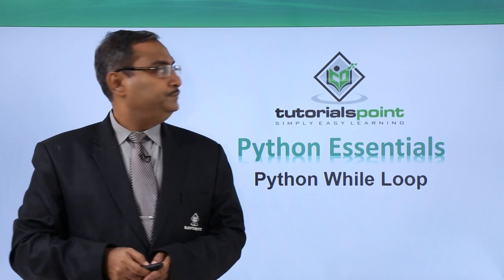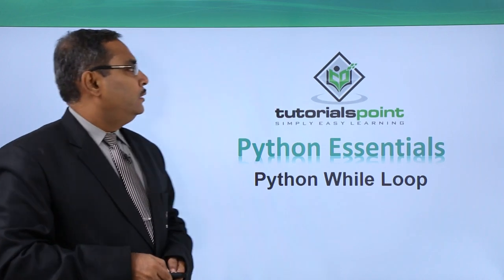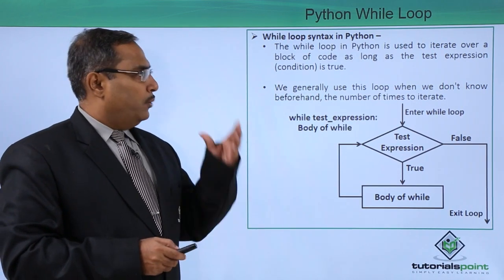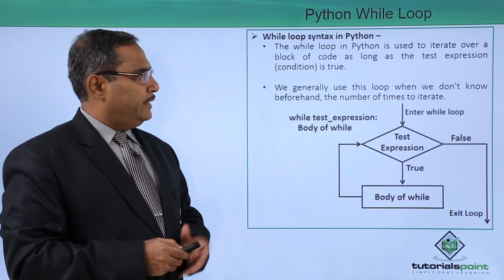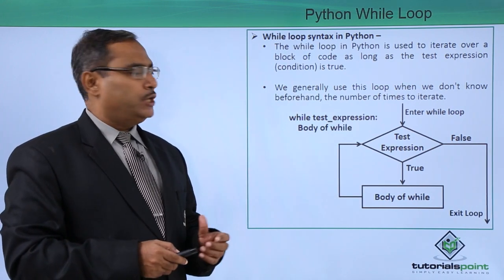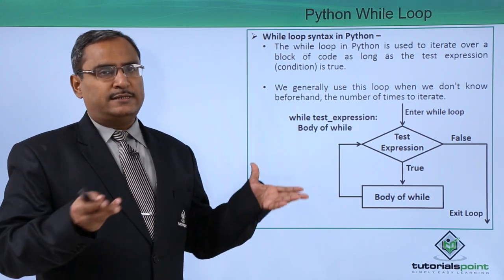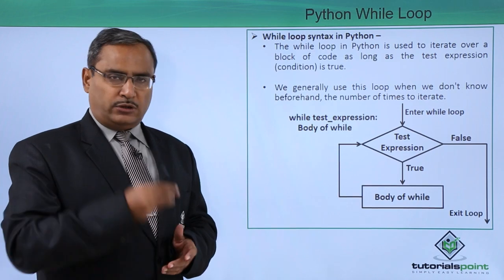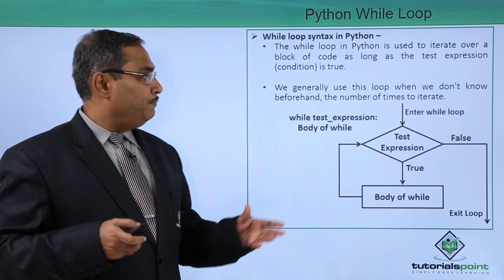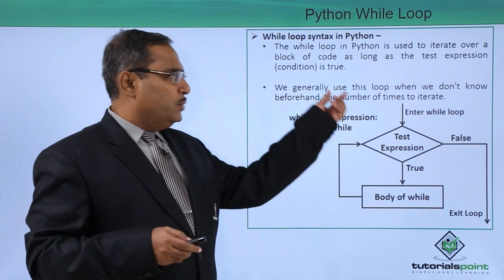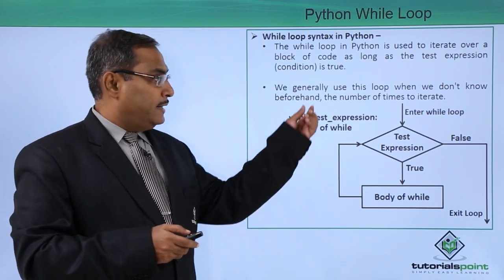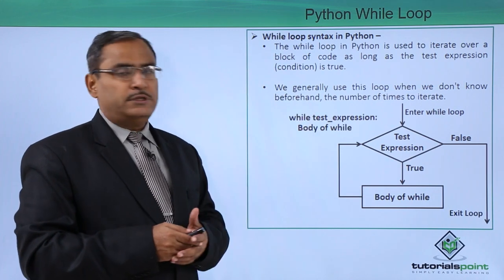Python while loop. The while loop in Python is used to iterate over a block of code as long as the test expression — that is, the condition — is true. When the condition is false, control will come out from the while block. We generally use the while loop when we do not know beforehand the number of times to iterate.